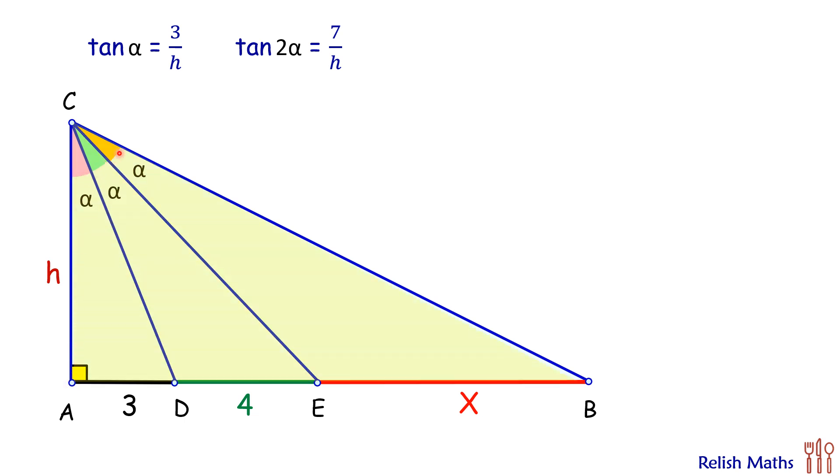Now let's apply the first formula, that is of tan of 2α. So here we'll put the value of tan x as 3 by h, and tan 2x as 7 by h.